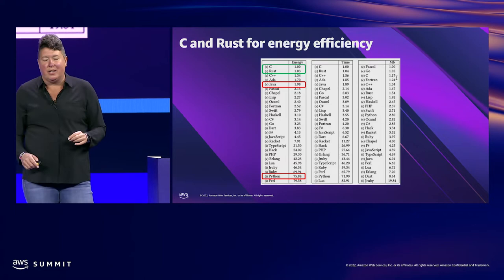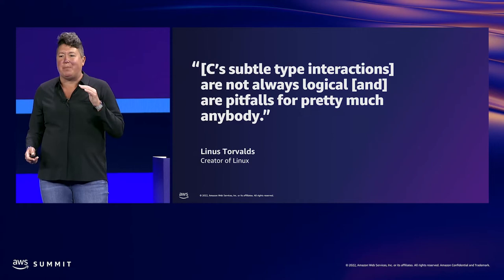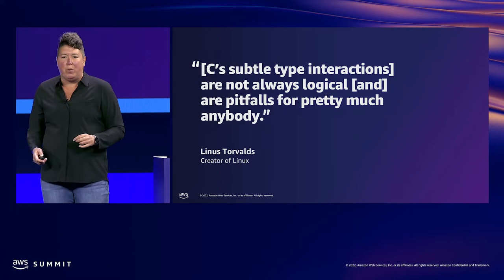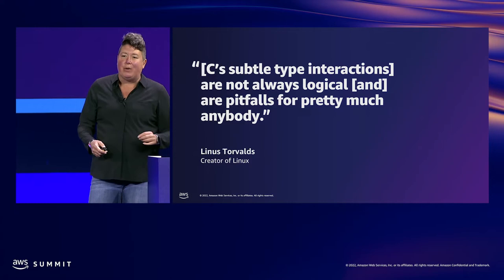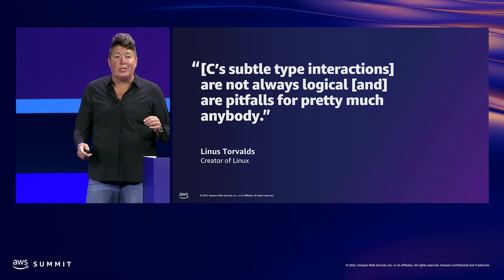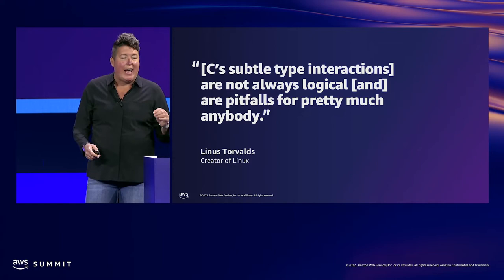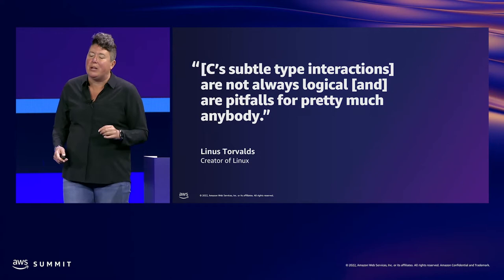Why not C? Everybody knows a C programmer. It's a well-established language that has been around for decades with a large developer community and well-worn tools. Well, Linus Torvalds — the creator of Linux — said in his keynote at Open Source Summit last year that implementing code in C can be like juggling chainsaws. As a lifelong C programmer, Torvalds knows that C's subtle type interactions are pitfalls for pretty much anybody. Rust delivers the energy efficiency of C without the risk of undefined behavior. Torvalds called Rust the first language he's seen that might actually be a solution.